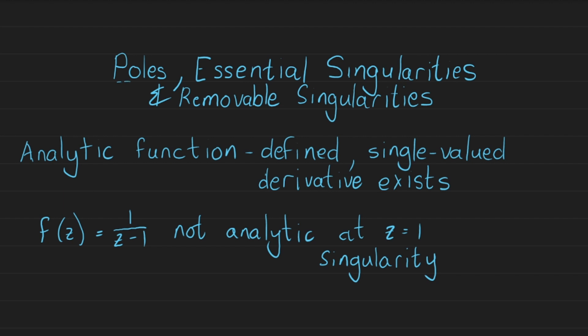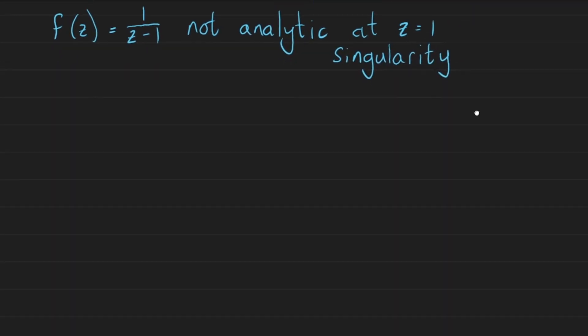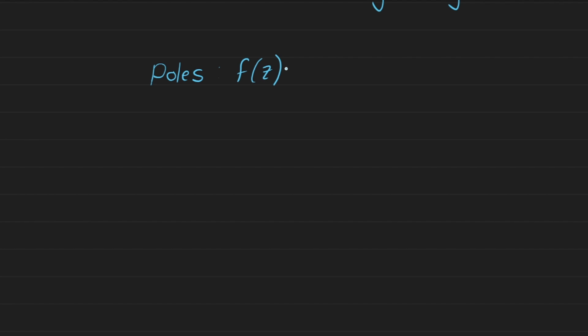The first type is a pole. When we speak about a pole, what we're saying is that the function approaches infinity in a controlled manner. The easiest way to illustrate this is through an example. We have a function f(z) = 2z / (z + 4)². The question is: what are the poles? We see that there is a singular point at z = -4.